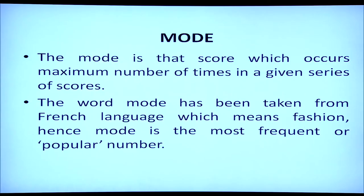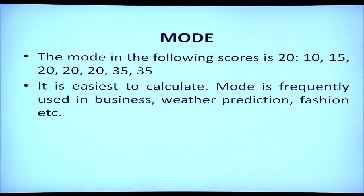The next measure of central tendency is mode. The mode is the score which occurs the maximum number of times in a given series of scores. The word mode has been taken from the French language, meaning fashion — hence, mode is the most frequent or popular number existing in any frequency distribution. For example, in the scores 10, 15, 20, 20, 20, 20, 35, 35, the mode is 20 because it appears the most number of times. Mode is the easiest to calculate and is frequently used in business, weather prediction, and fashion.